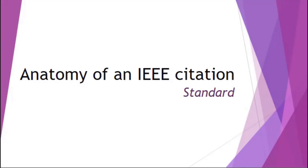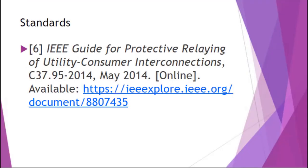The next citation is the anatomy of a standard in IEEE citation format. To cite standards in IEEE format, you start with the footnote in brackets — in this case number six. After the bracket comes the title of the standard, which you italicize, followed by a comma. Then you have the number of the standard — in this case C37.95-2014 — followed by a comma and the month and year the standard came out, followed by a period. Since this standard is accessed online from IEEE Xplore, you put [Online] in brackets after it, followed by a period, and then the URL where you can access the standard.